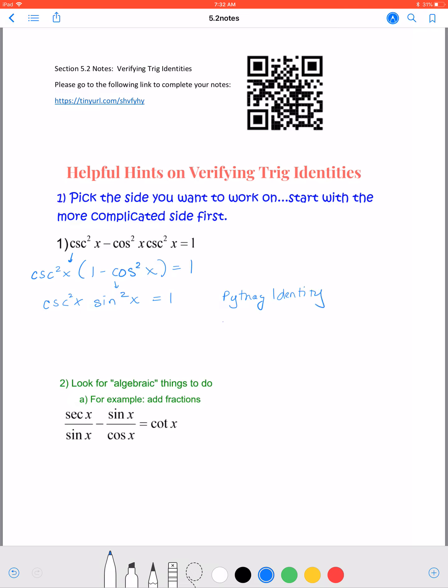From there we'll use the reciprocal identity. So we can write this as 1 over sine squared of x times sine squared of x, which we know is equal to 1.